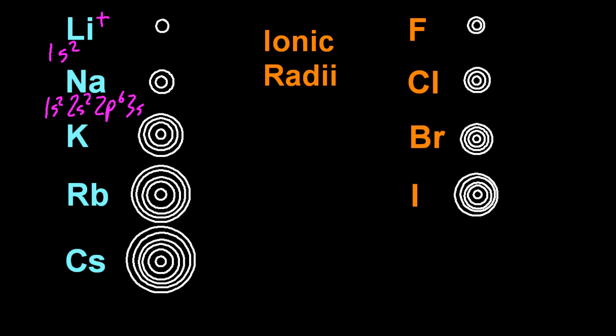Same for sodium. If that loses its outer main energy level, it's going to be smaller. And so that explains why positive ions are smaller than their parent atoms. Because invariably, they've lost the outer main energy level. So they're smaller.